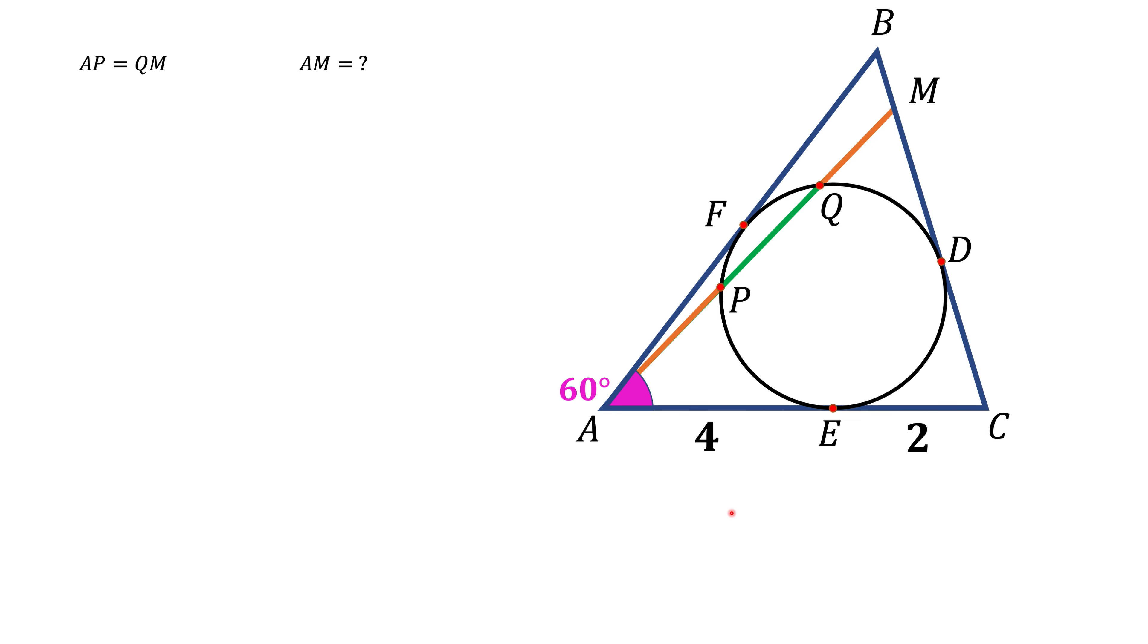Here we have a triangle ABC and it has an inscribed circle inside, tangent to all three sides at points D, E, and F. Angle A in triangle ABC is 60 degrees. We know side AE is 4, EC is 2. Inside this triangle we have a line AM that intersects the circle at points P and Q, such that AP equals MQ. We're asked to find the side AM.